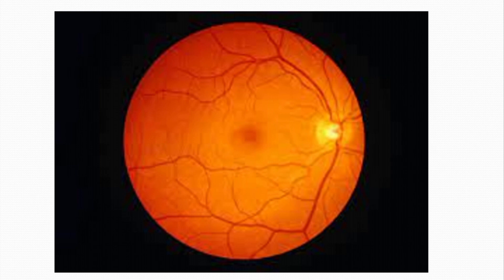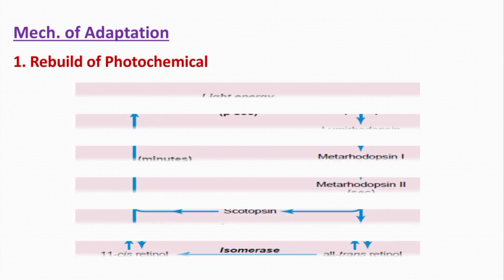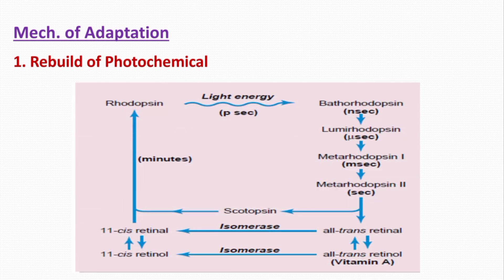Now let's discuss the various mechanisms of adaptation. The first mechanism is rebuild of the photochemical. In bright light, much of the photochemical is broken down, as you can see here, and some time is required in the dark for rebuild of the photochemical when the person moves to dim light. This is a slow and time-consuming process — it takes about 20 minutes.